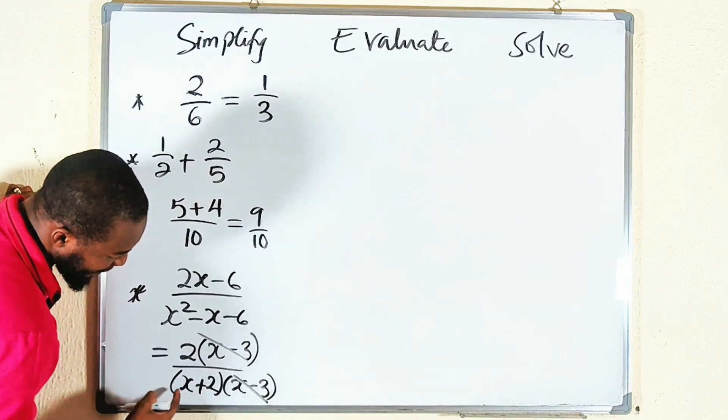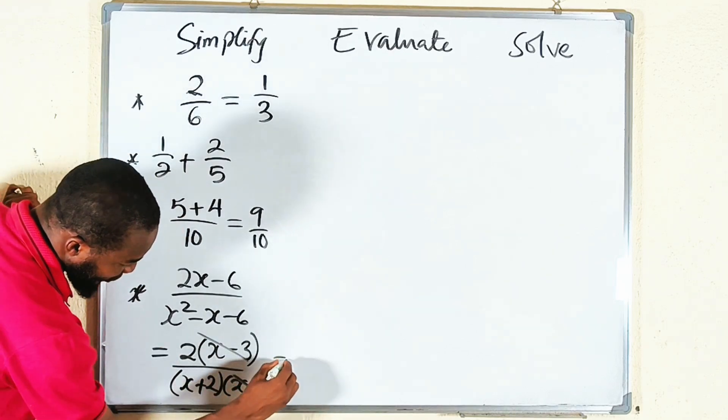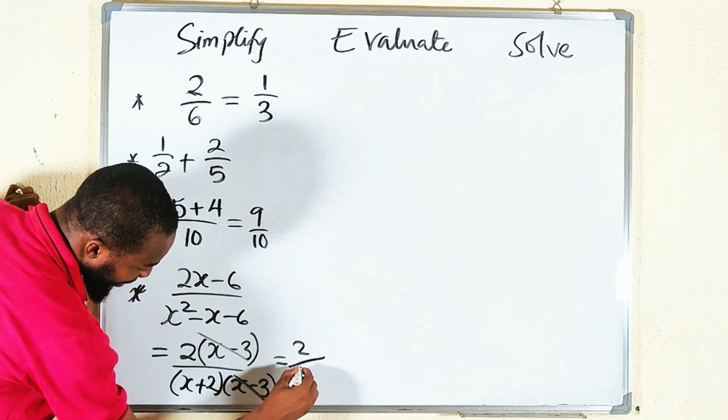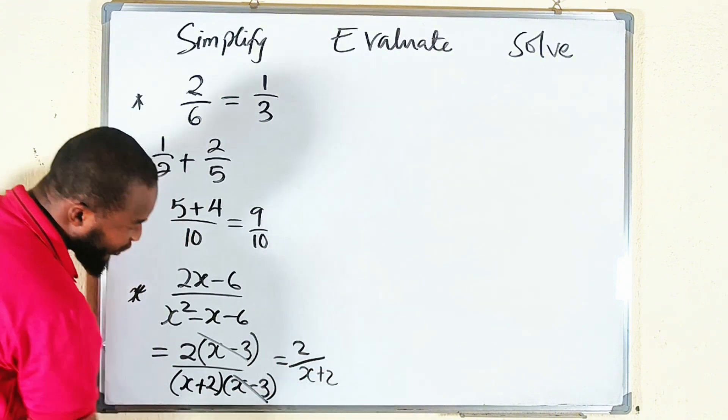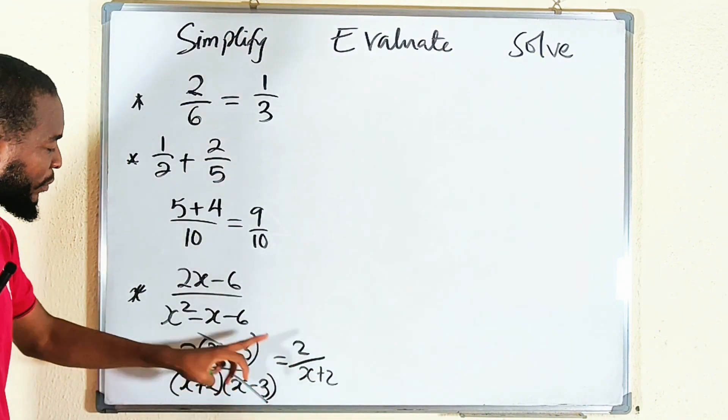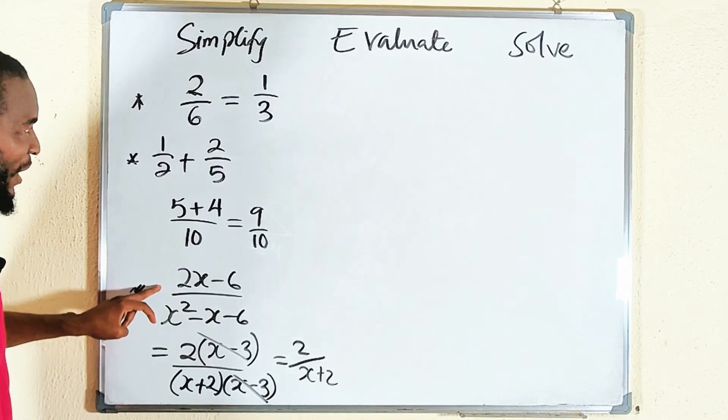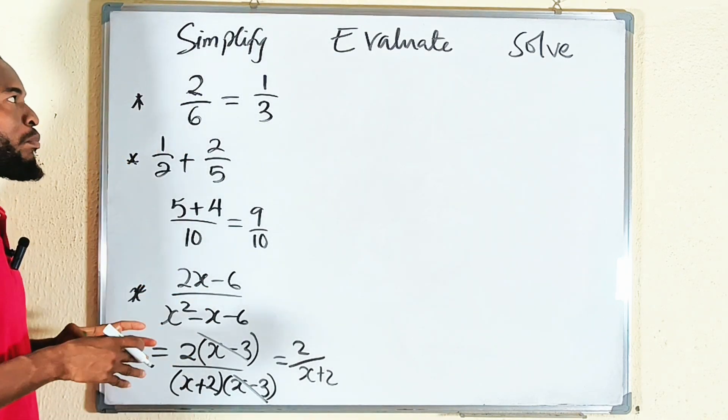So you can see x minus 3 will cancel because they are the same. All you have left is 2 divided by x plus 2. So 2 divided by x plus 2 is the simplified version of this expression. This is what we call simplify.